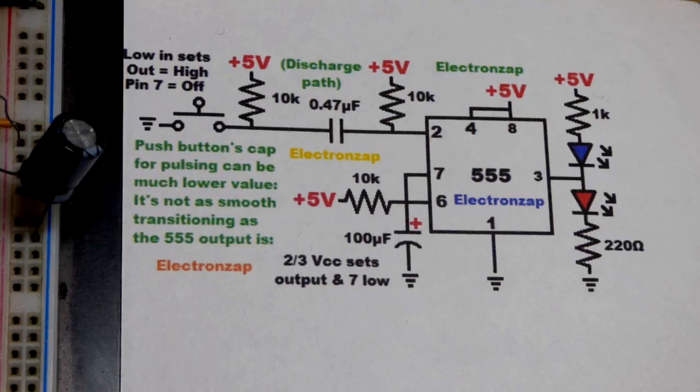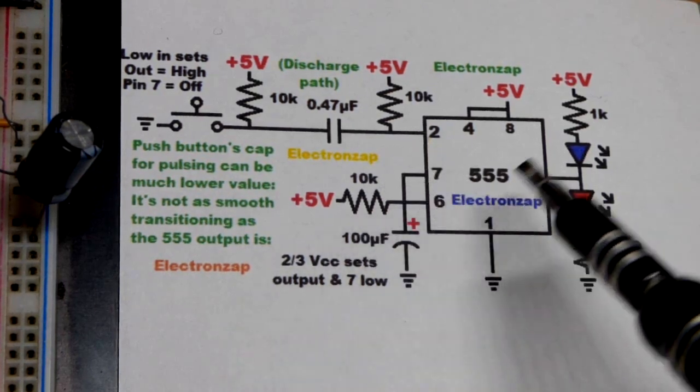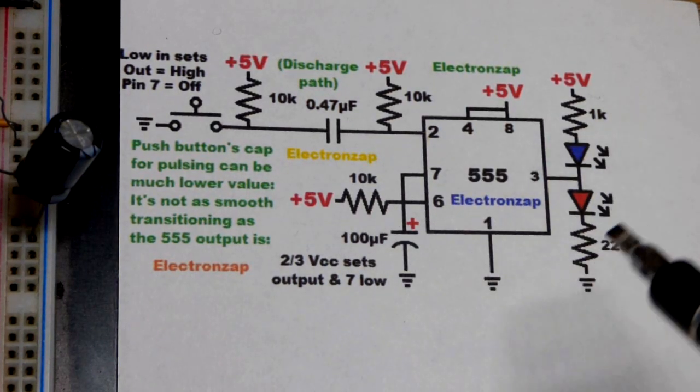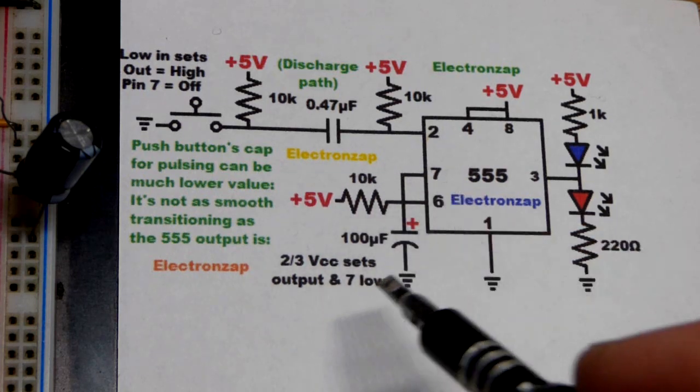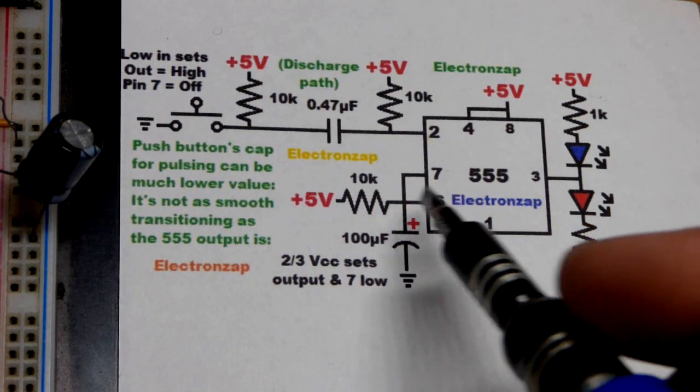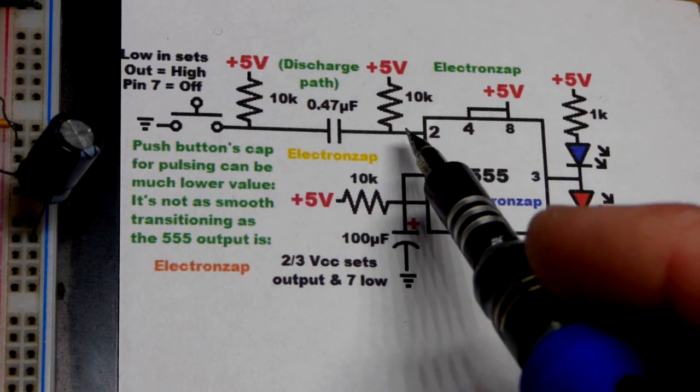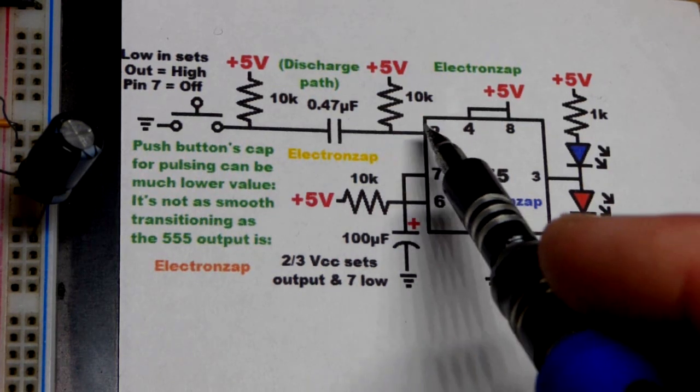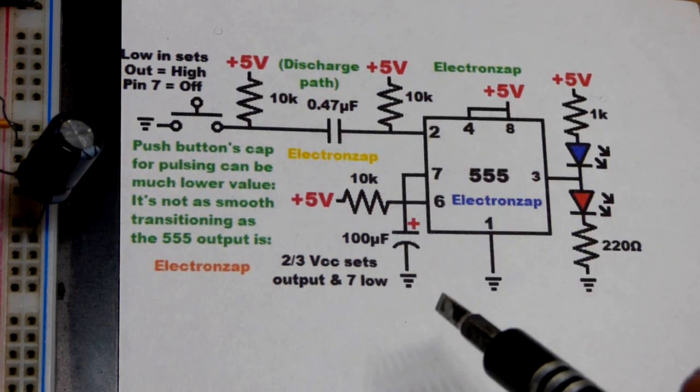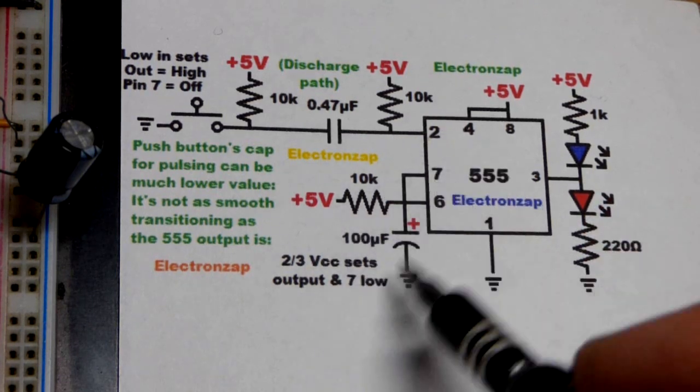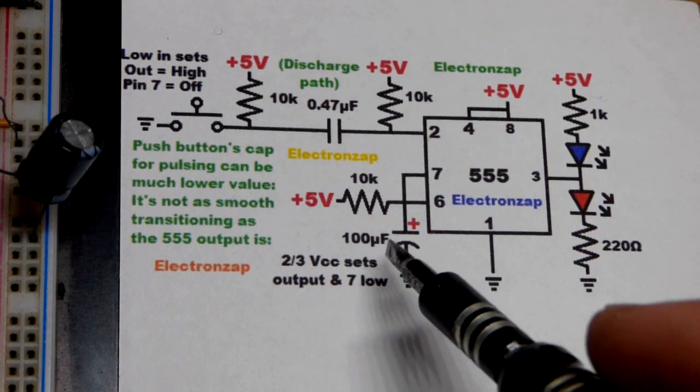So now we'll look at the schematic. All of this is for demonstration purposes, but this part is the monostable mode of the 555 timer the way we wired it up. A low quick pulse to pin number 2, doesn't matter how long it is as long as it's shorter than the timing right here.